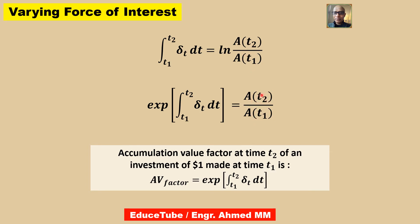Now what it says? The accumulated value at time t2 divided by the accumulated value at time t1 is equal to 1 plus percentage increase in the accumulated value from t1 to t2. And this accumulation value at time t2 of an investment of $1 made at time t1, we can write it as this. Accumulation value factor equal to this, exponential t1 to t2 dt.